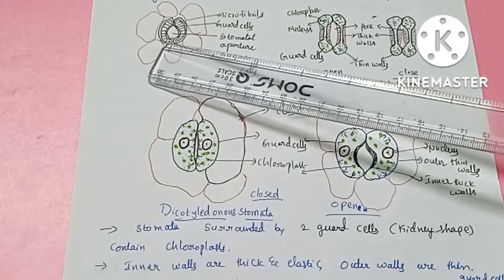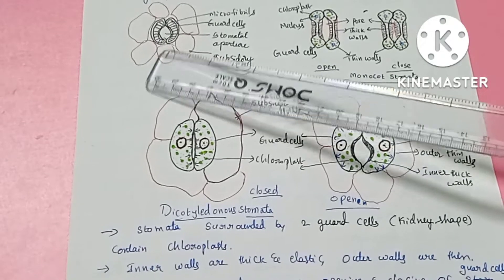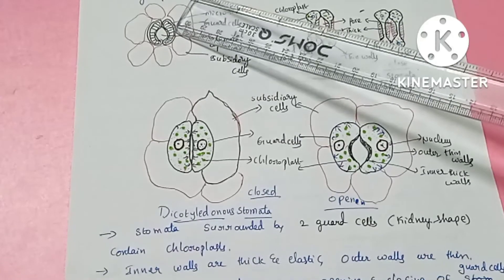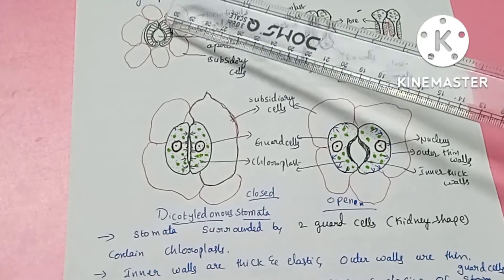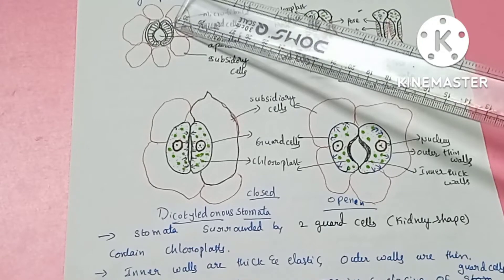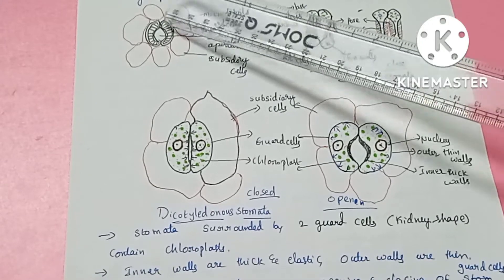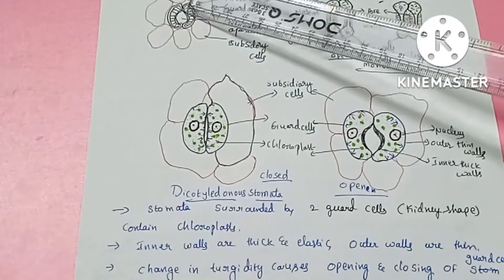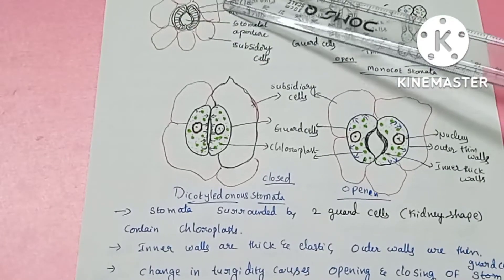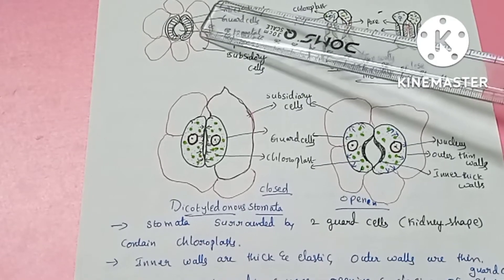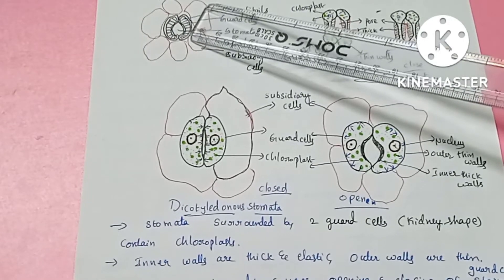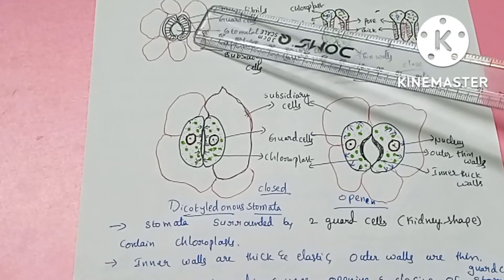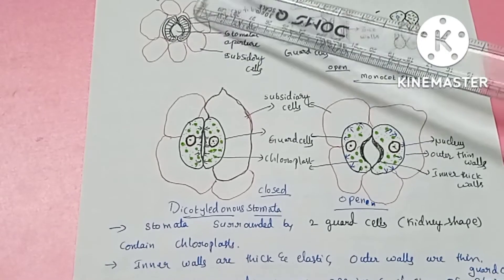The guard cells are involved in the opening and closing of stomata. The inner walls of guard cells are thick and the outer walls are thin. The inner walls are also elastic, which allows the guard cells to change shape.